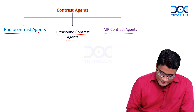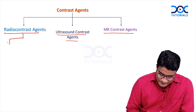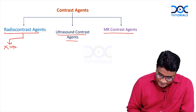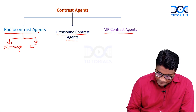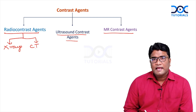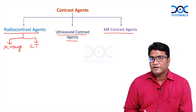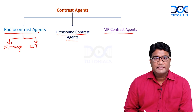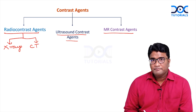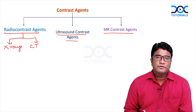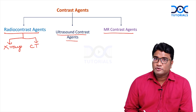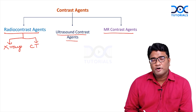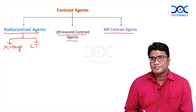Radio contrast agents are agents used in X-rays as well as CT scans. These radio contrast agents can be barium or iodinated compounds, and they can be either positive contrast agents or negative contrast agents.